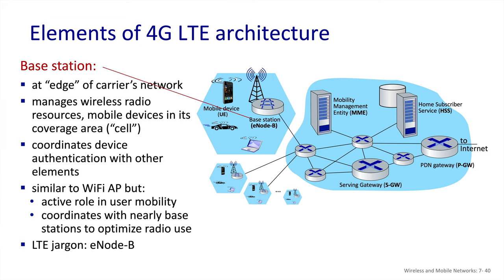Each base station manages its own cell, and the base stations each have an identifier whereby UEs can identify transmissions from one base station versus another. All devices have to authenticate to the base station, which requires the base station to interact with elements in the packet core. The base stations also coordinate with each other in order to optimize load on the network and facilitate user mobility from one cell to another.